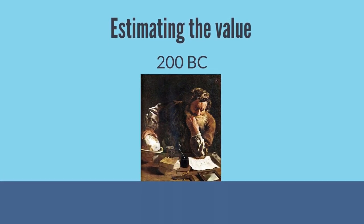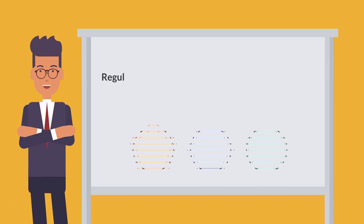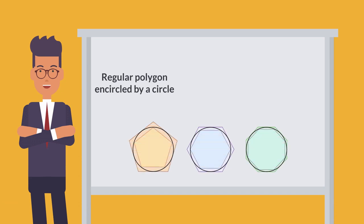Archimedes discovered a simple method for estimating the value around 200 BC. He observed that a regular polygon encircled by a circle has a perimeter greater than the circle's circumference.